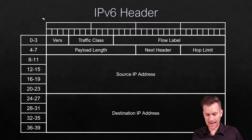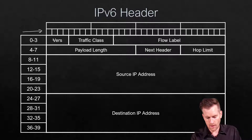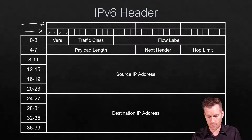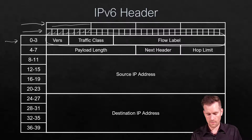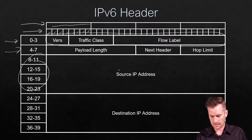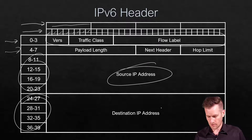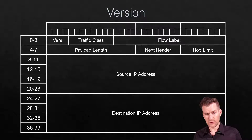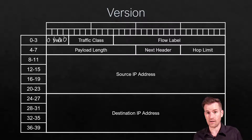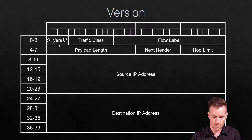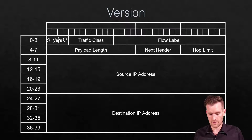Here's a quick recap of how the IPv6 header is structured. Each square represents a bit, and the top shows the byte count — eight bits per byte. Bytes zero through three are on the first row, bytes four through seven on the next. The first field is the version field, which is the same in IPv4 and IPv6. IPv4 uses 0100 (decimal 4), while IPv6 uses 0110 (decimal 6).